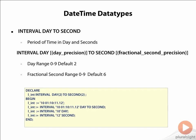Here is a code snippet where we have declared a variable lint of type INTERVAL DAY TO SECOND with a day precision of 2 and a second precision of 2. We can assign a value to it as a literal such as 10 days, 1 hour, 10 minutes, 11 seconds, and 12 milliseconds. We can also express the same by assigning INTERVAL '10 01:10:11.12' DAY TO SECOND.